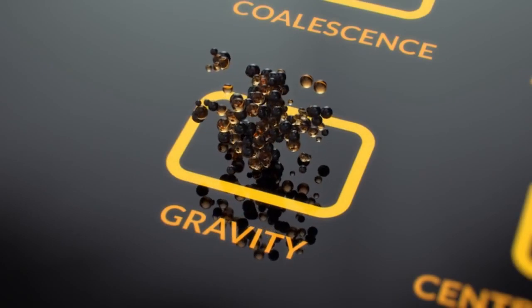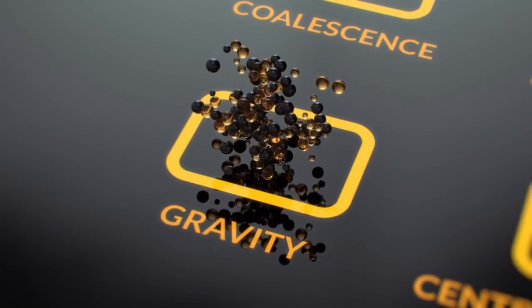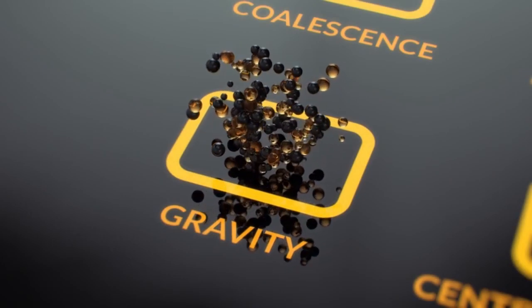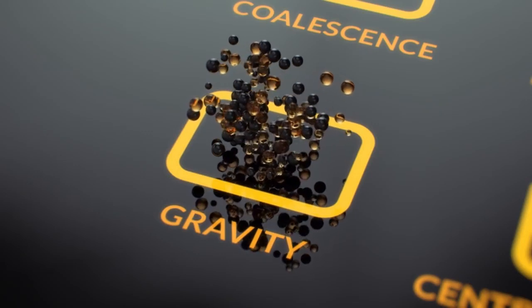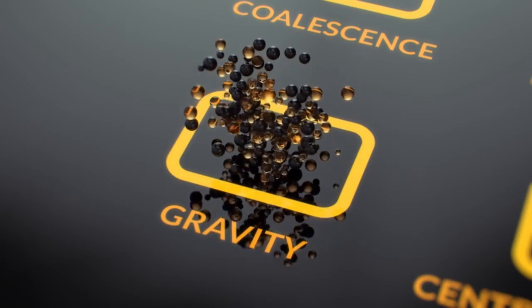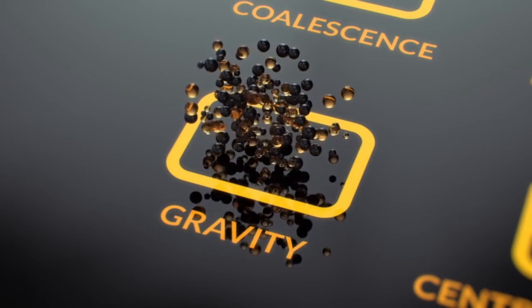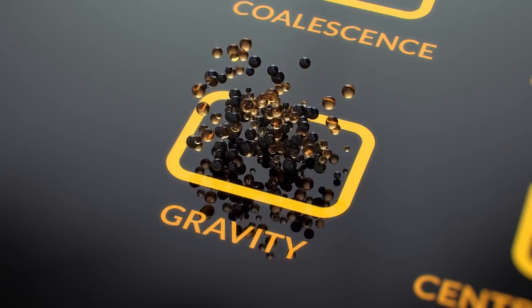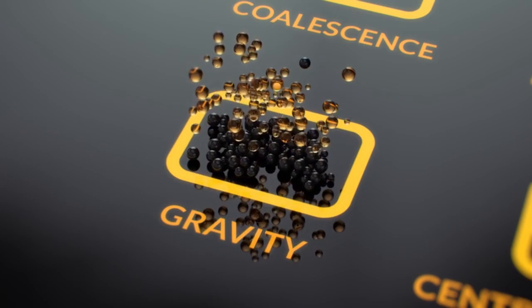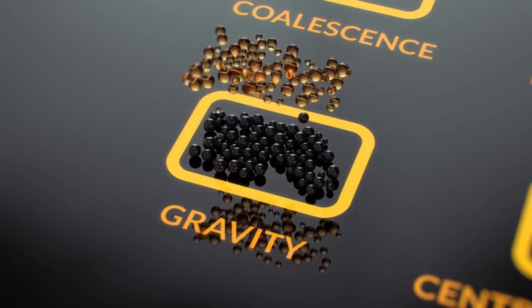Gravity: Nearly all bilge water separators use gravity separation at some point in the bilge water treatment process, even if it is in the bilge tank. Heavy particles, sludge and dirt, sink to the bottom, whilst lighter fractions, oil and scum, float to the top.